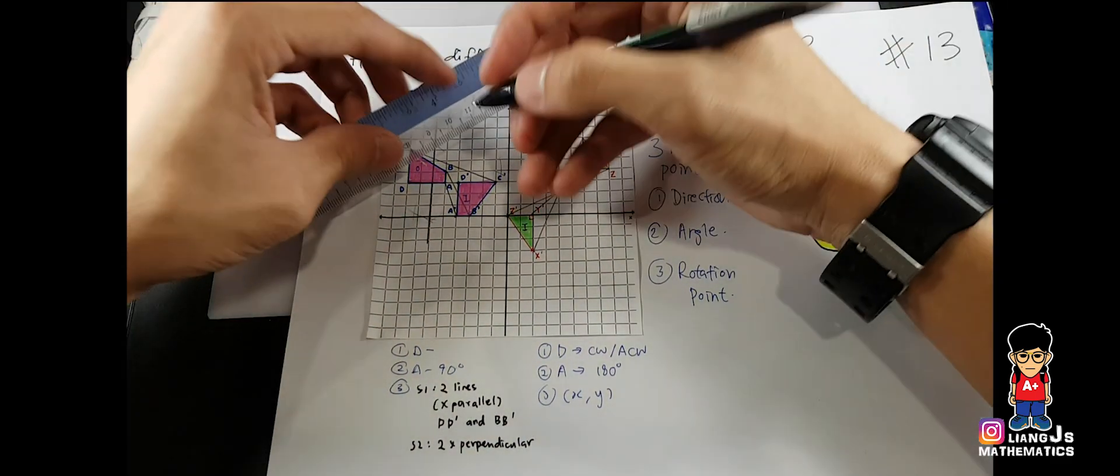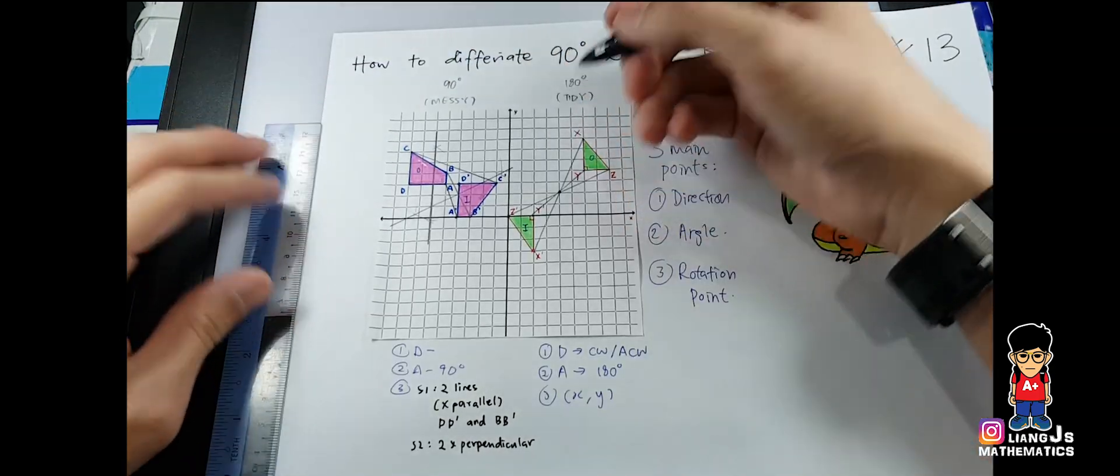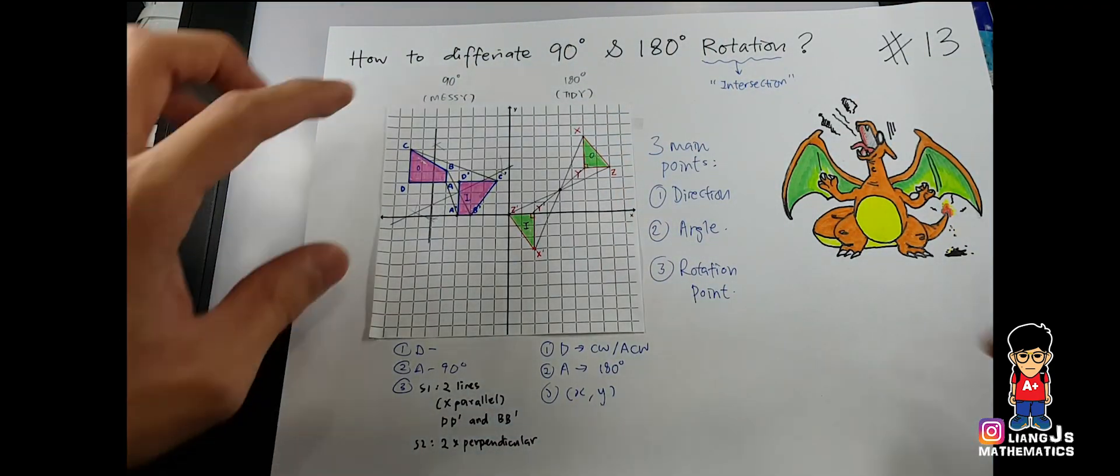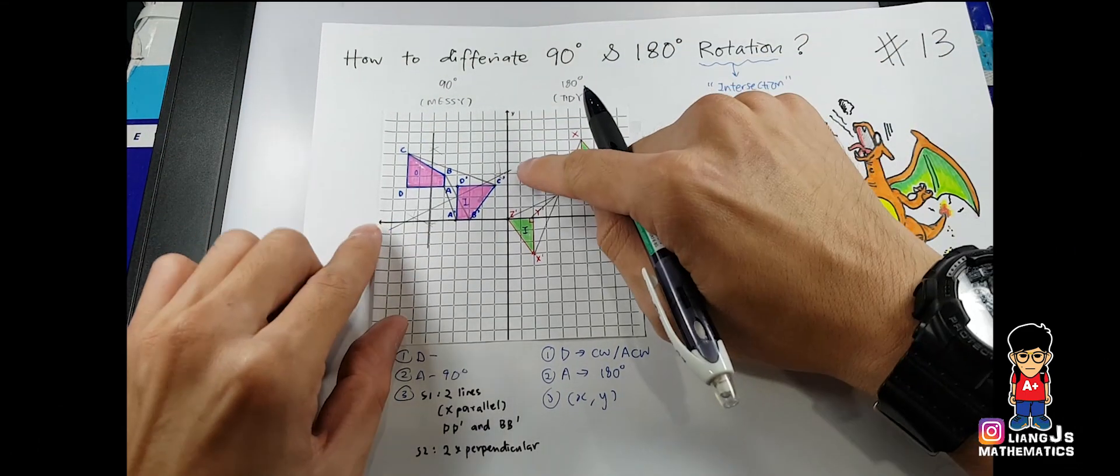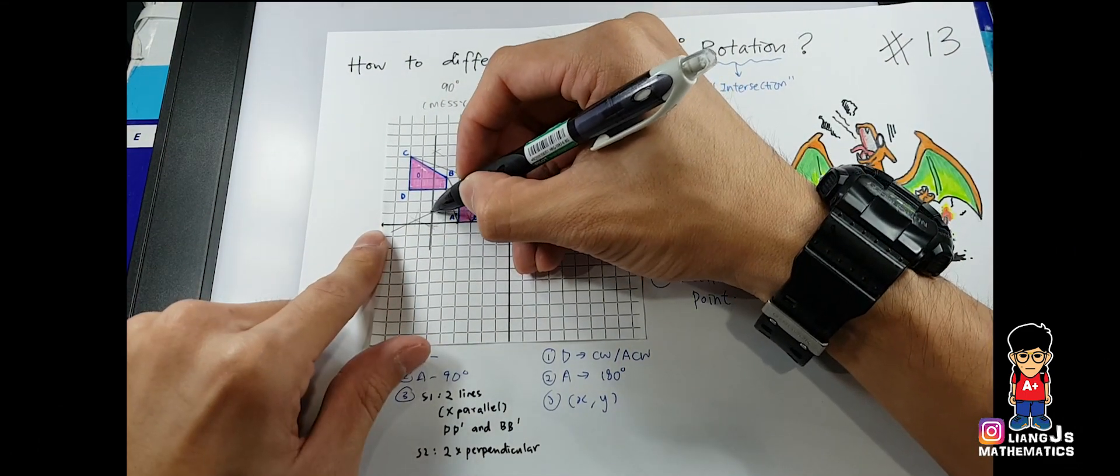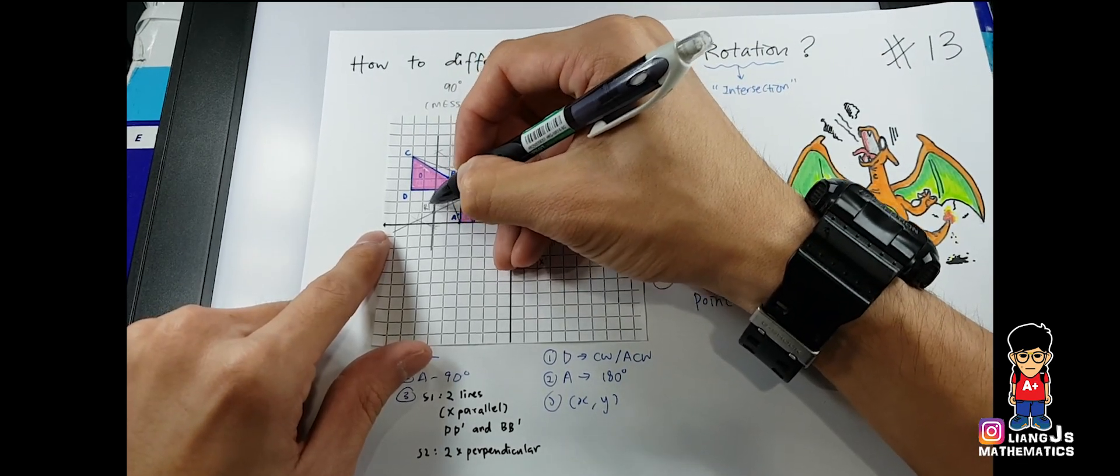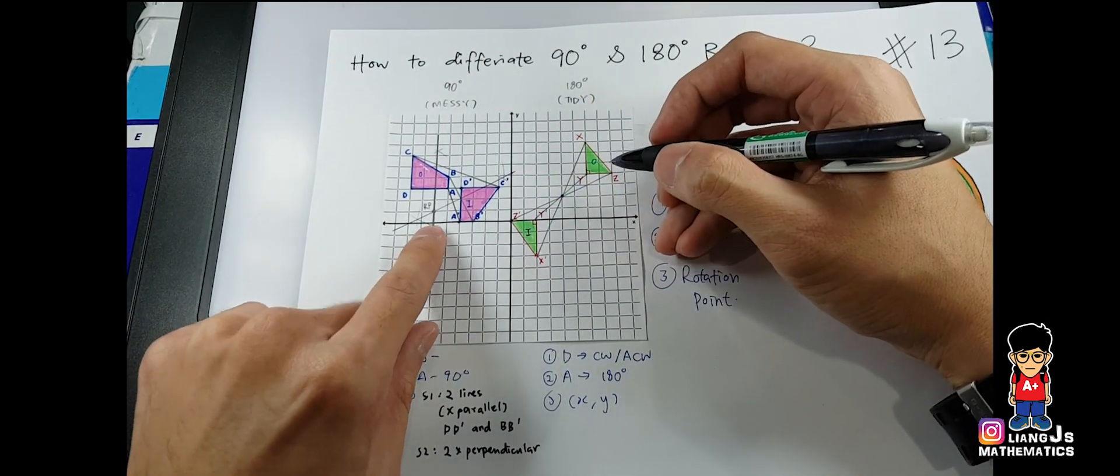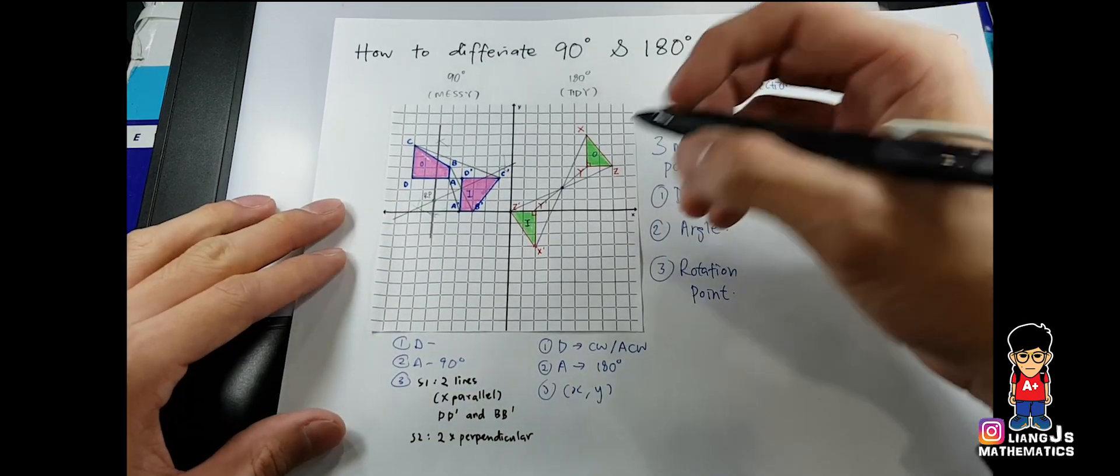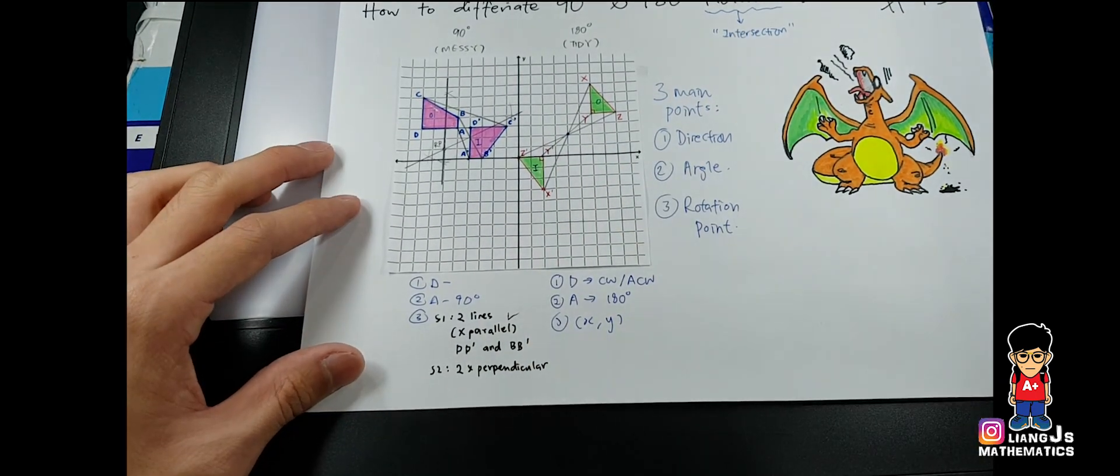So I connect them using my ruler. So I will draw them. In the end, once I draw it, do you notice the first perpendicular and the second perpendicular eventually intersect at this point? And what you have to do is, yes, that's your rotation point. And you just have to go for your X, go for your Y, and you will be able to find your rotation point.